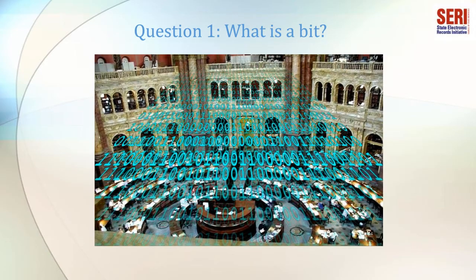Question 1: What is a bit? The Tech Terms Computer Dictionary defines a bit as the smallest unit of measurement used to quantify computer data. Each bit consists of a single digit, a zero or a one. Every digital file, whether it's a database, a word processing document, a digital image, a spreadsheet, or other type of file, is fundamentally a bundle of zeros and ones. The loss or alteration of a single bit may negatively affect the appearance or functionality of digital data, and in some instances may render the file completely unreadable.